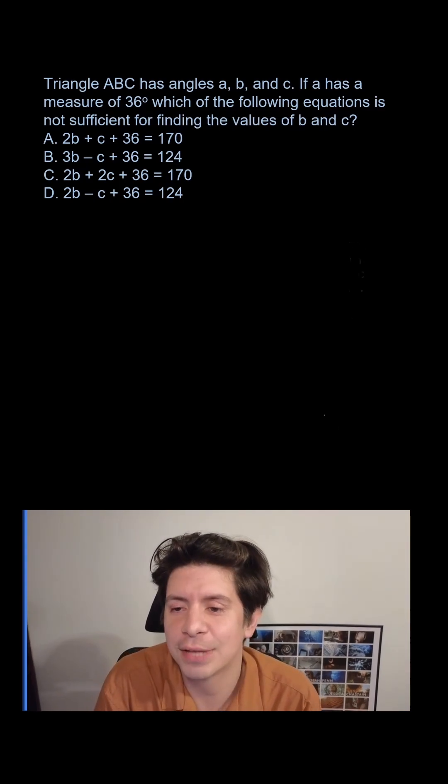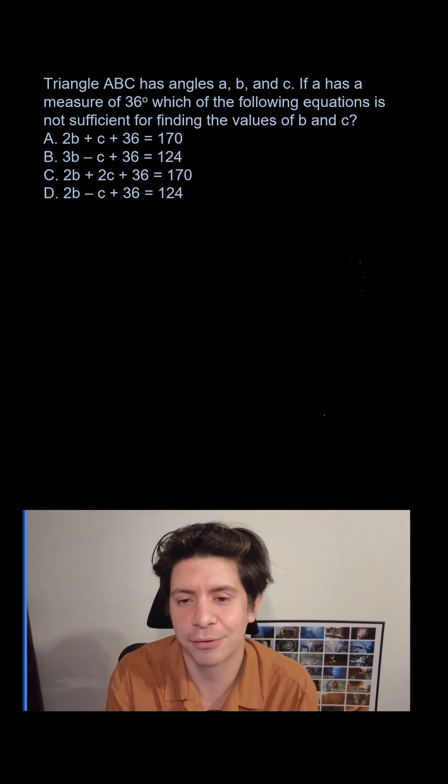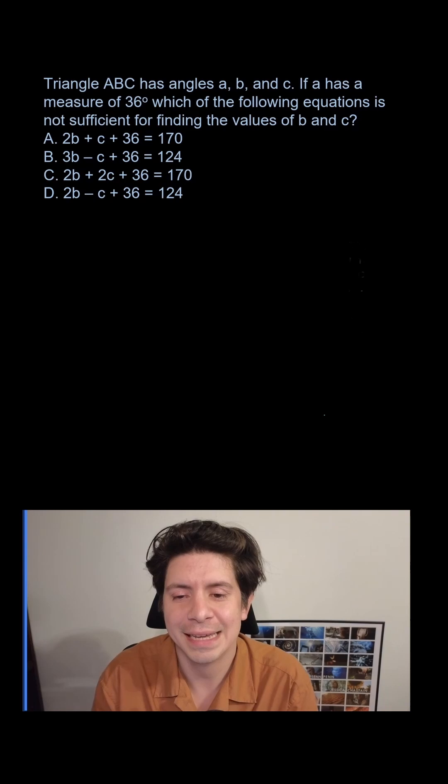So we're going to start with this one here. Triangle ABC has angles A, B, and C. If A has a measure of 36 degrees, which of the following equations is not sufficient for finding the values of B and C?